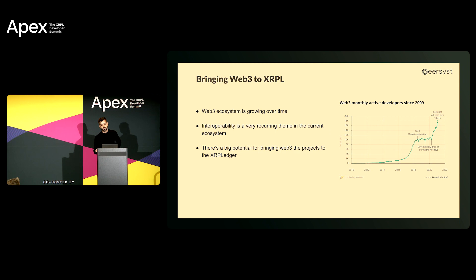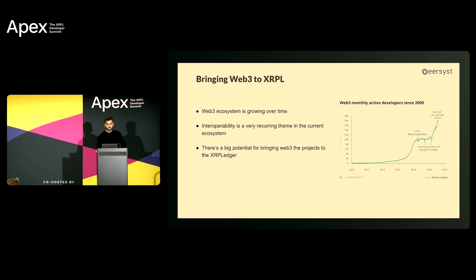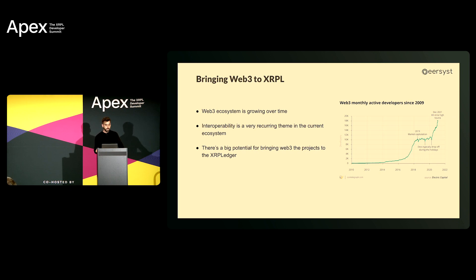Also, interoperability is a very recurrent theme in the current ecosystem. EVM can help a lot in building interoperability with other blockchains. And if we think about the research ongoing recently, we see that most of it is on the EVM side. For example, last month the ZK-EVM was published in the Polygon ecosystem, which is an incredible advance. So we can take advantage of this and bring all this potential to the XRPL ledger.